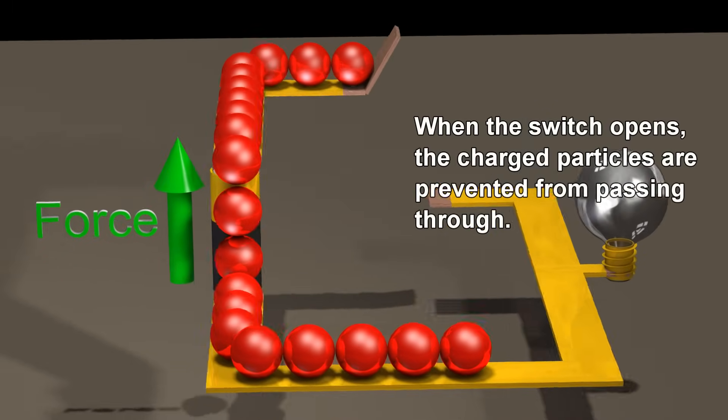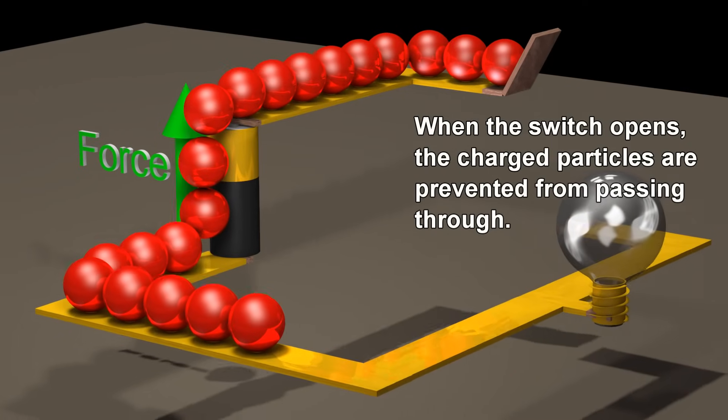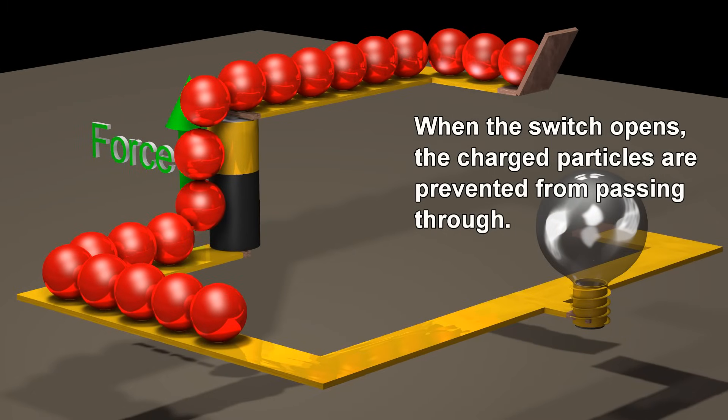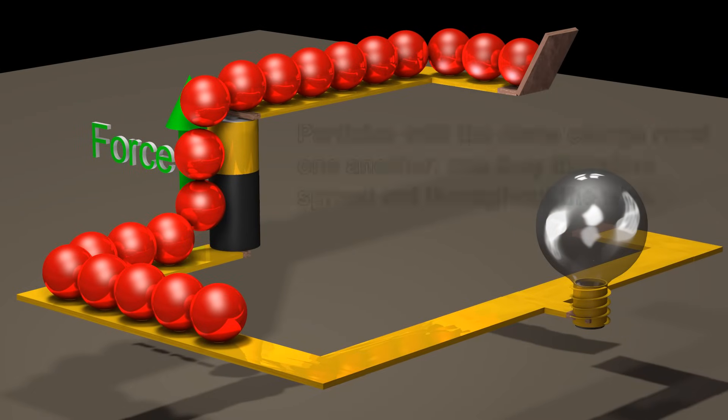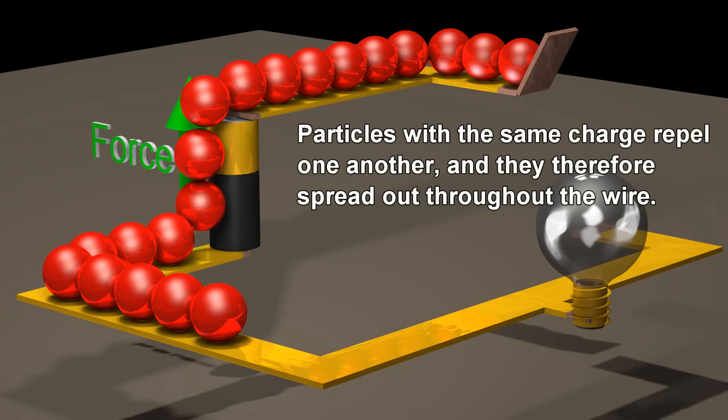When the switch opens, the charged particles are prevented from passing through. Particles with the same charge repel one another, and they therefore spread out throughout the wire.